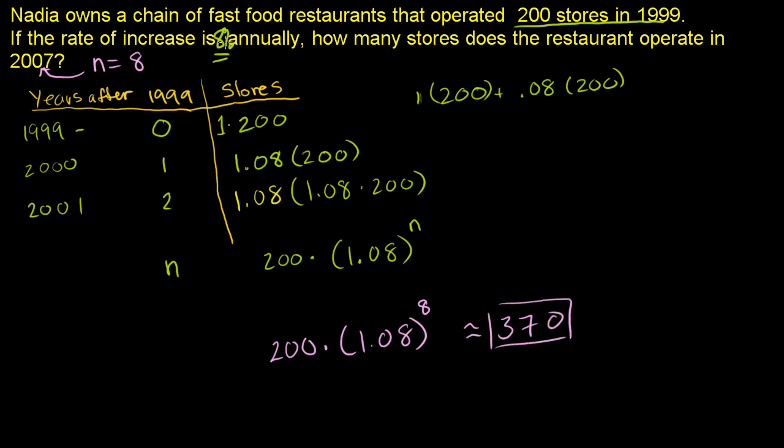So 8% growth might not look like something that's so fast or that exciting, but in under a decade, in only 8 years, she would have gotten her restaurant chain from 200 to 370 restaurants. So over 8 years, you see that the compounding growth by 8% actually ends up being quite dramatic.